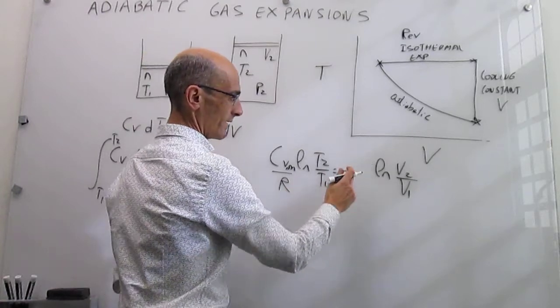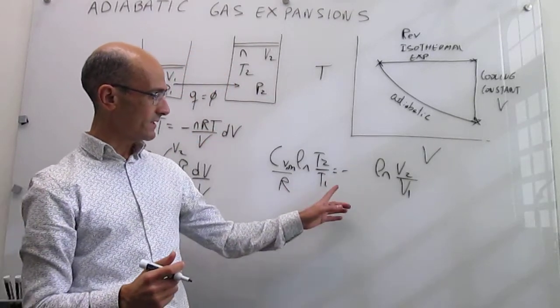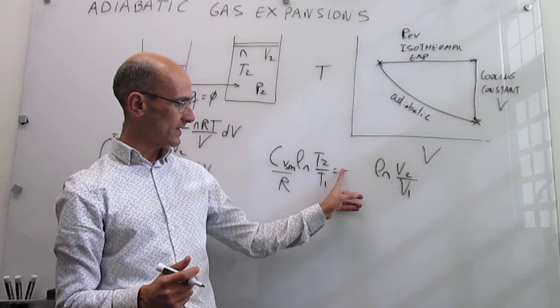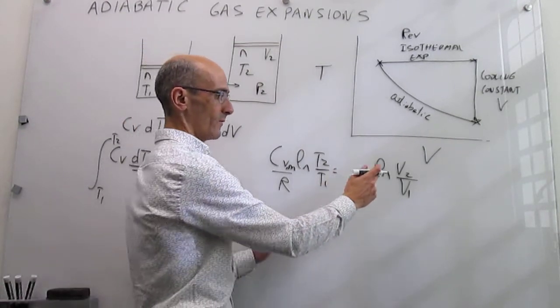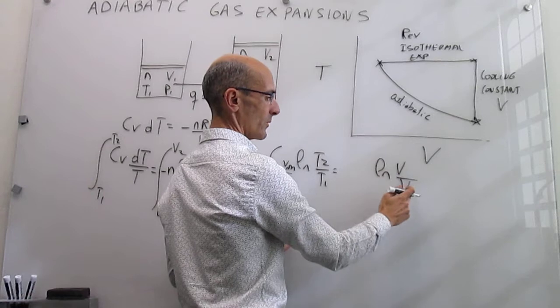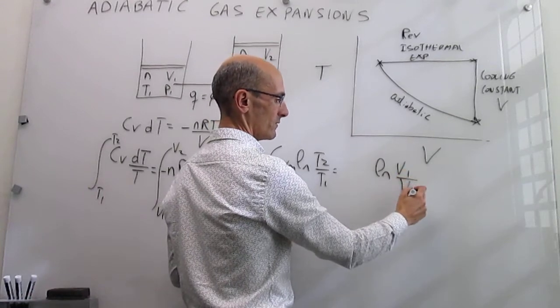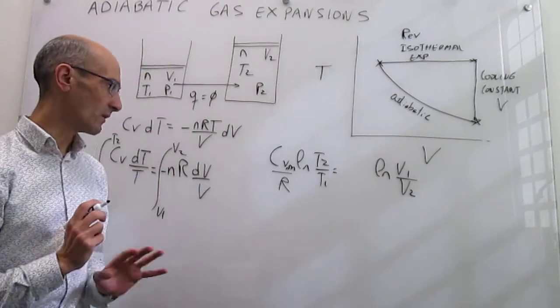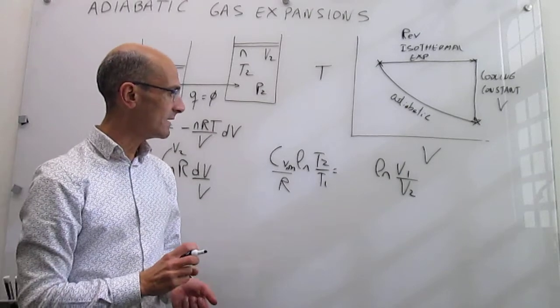Great, and one more manipulation is that we can change the sign of that logarithm if we reverse the numerator and denominator, V1 over V2. So all the negative signs are gone, and this will be useful.